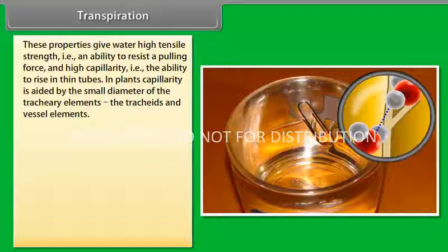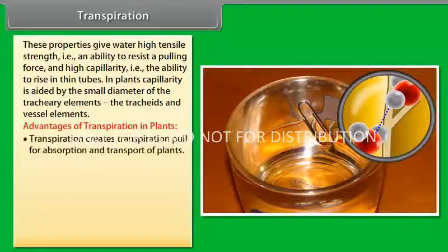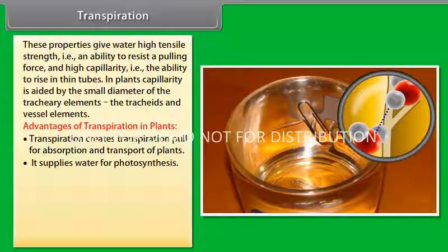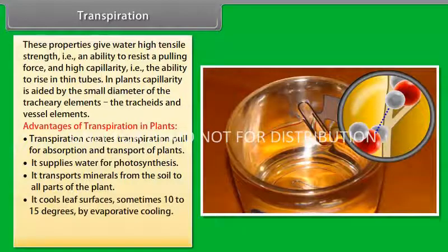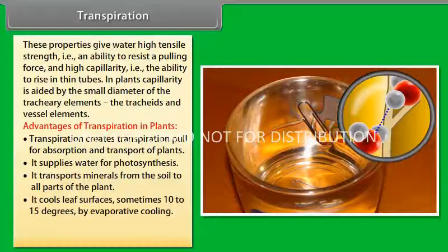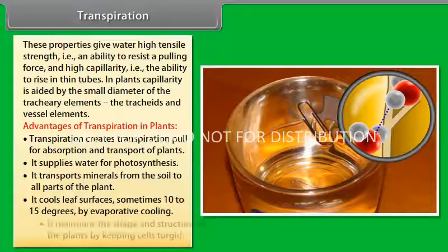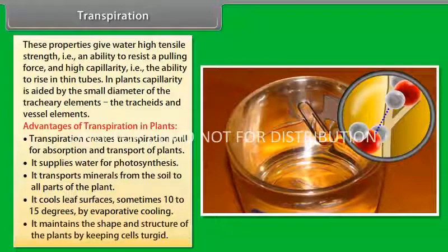Let us take a look on the advantages of transpiration in plants. It creates transpiration pull for absorption and transport of plants. It supplies water for photosynthesis. It transports minerals from the soil to all parts of the plant. It cools leaf surface, sometimes 10 to 15 degrees, by evaporative cooling. It maintains the shape and structure of the plants by keeping cells turgid.